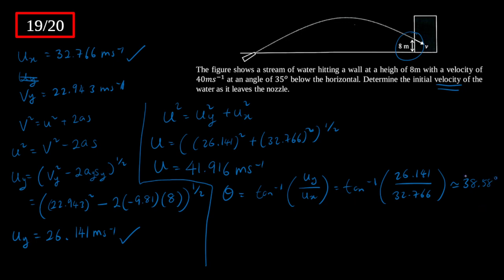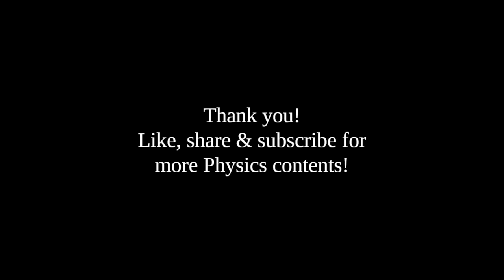So the initial velocity of the water as it leaves the nozzle is 41.916 meters per second at an angle of 38.58 degrees. I can illustrate this with a vector diagram showing the y and x axes, with u = 41.916 at 38.58 degrees above the horizontal. That is all from this video — thank you very much, and don't forget to like, share, and subscribe for more physics content.